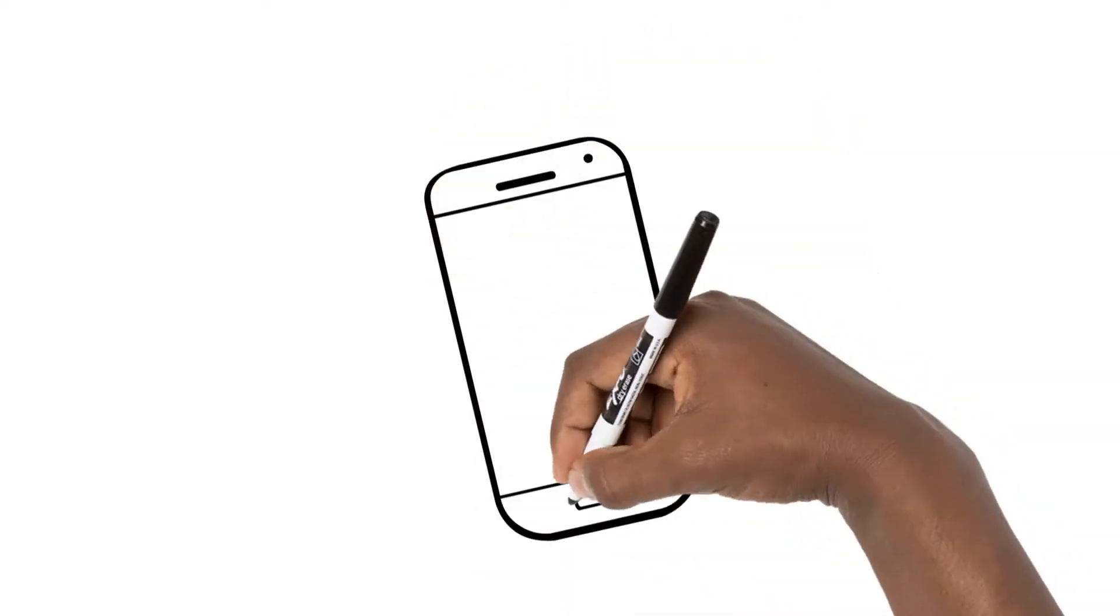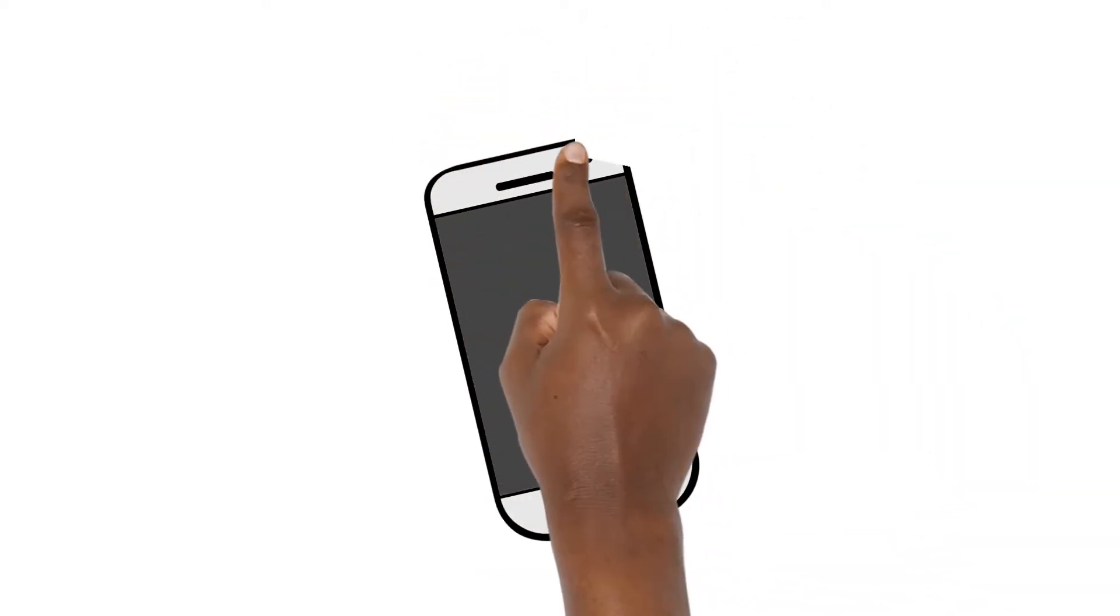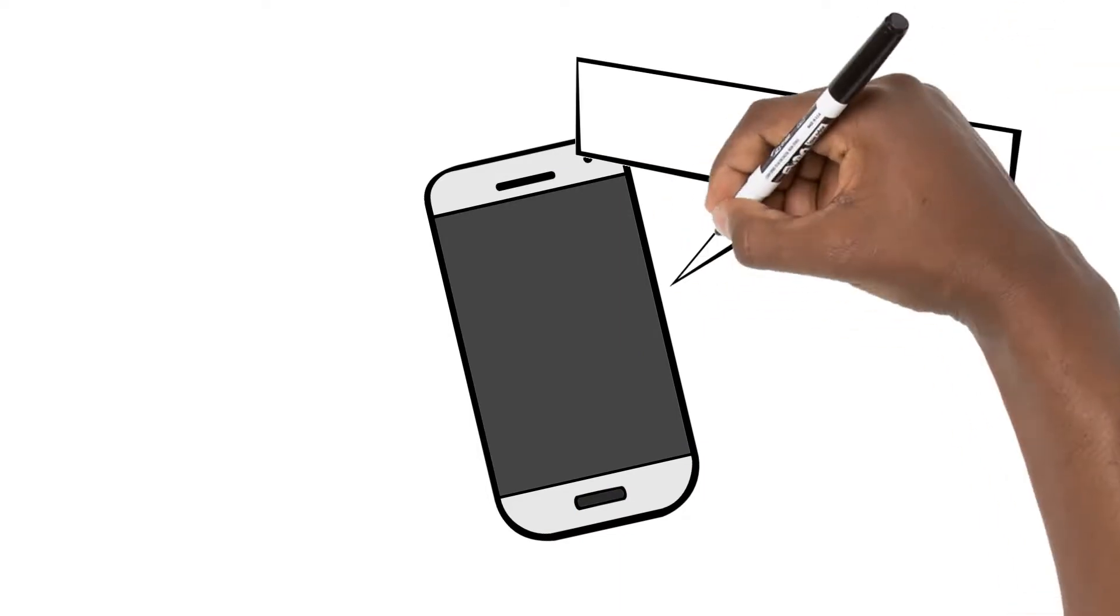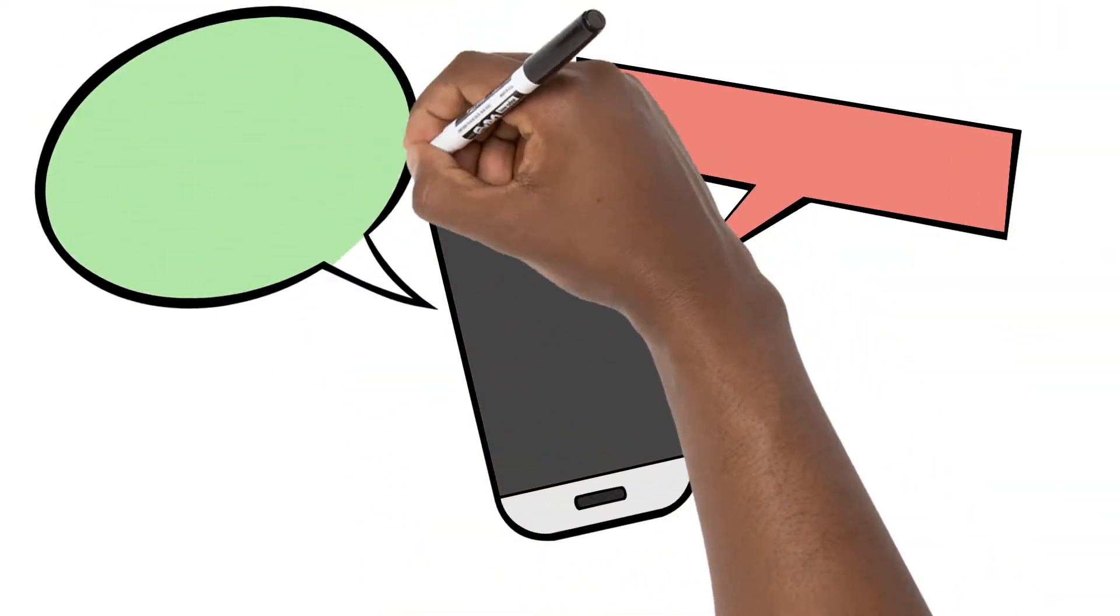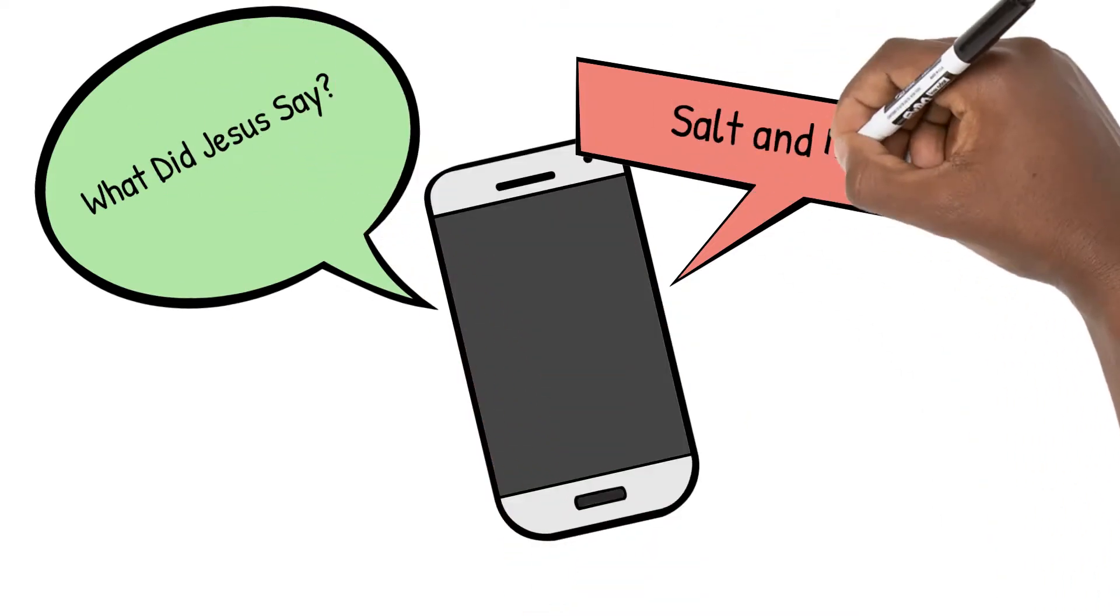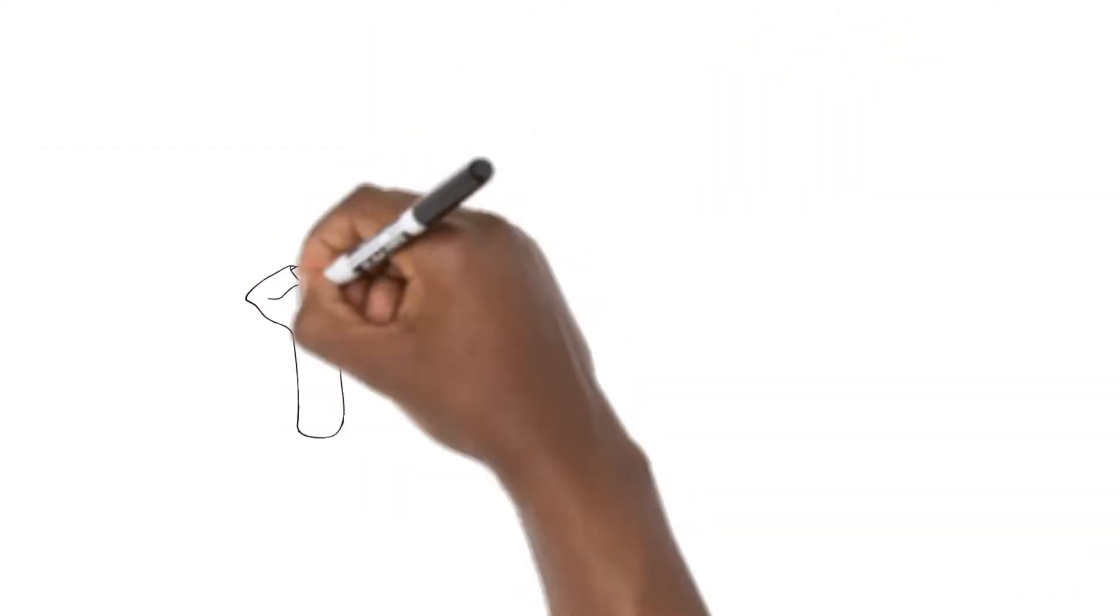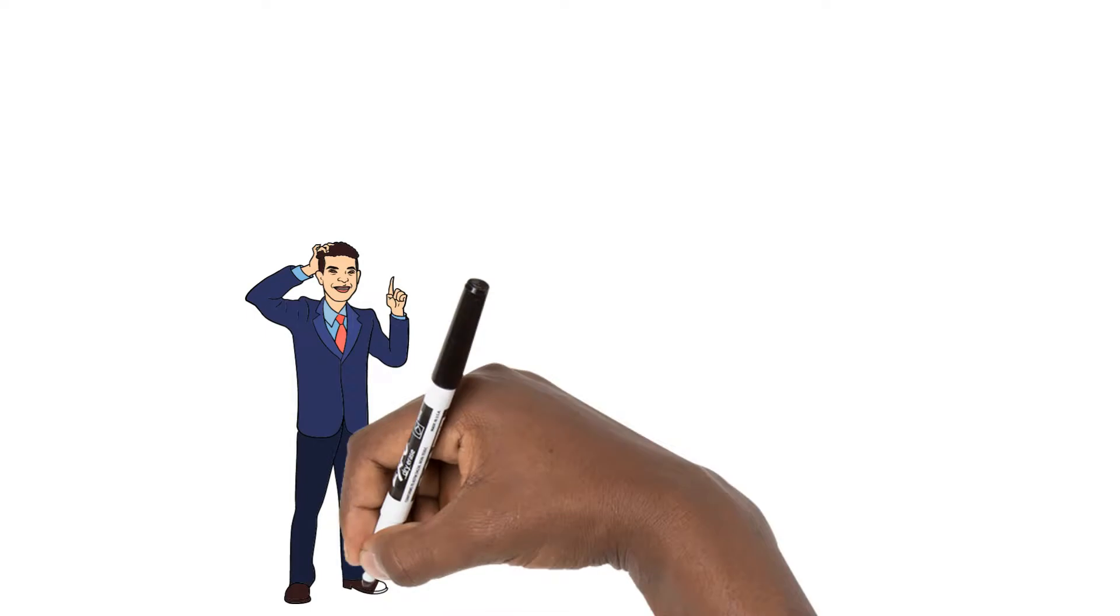Hey extremers, welcome to our explain video on our latest series What Did Jesus Say, also known as WDJS. This week's video is about what Jesus said about salt and light. Before we can discuss what Jesus said, let's first discuss who he is.